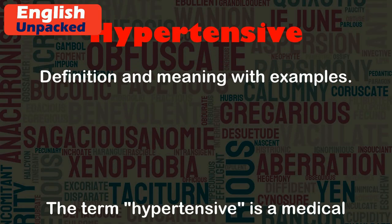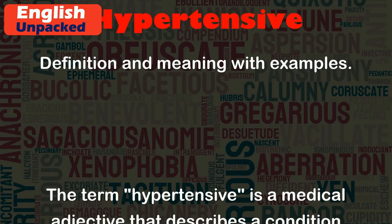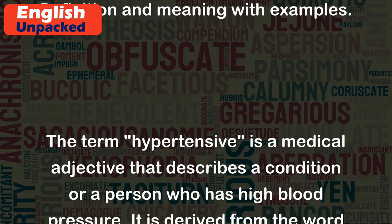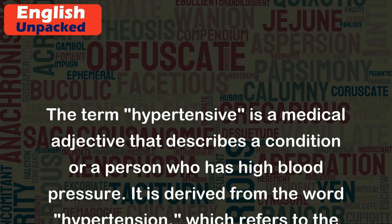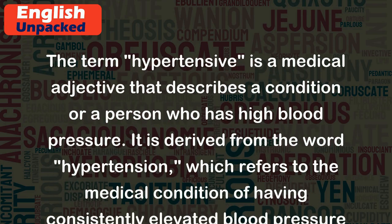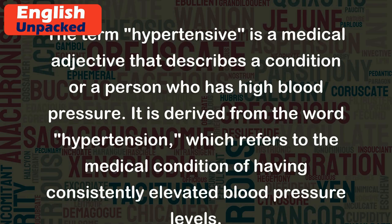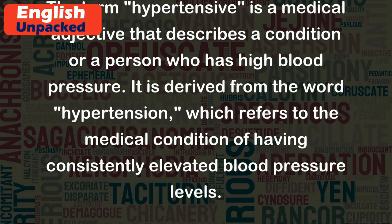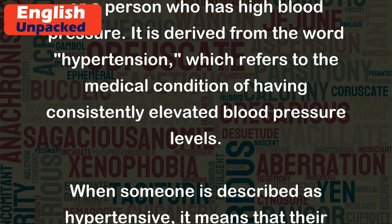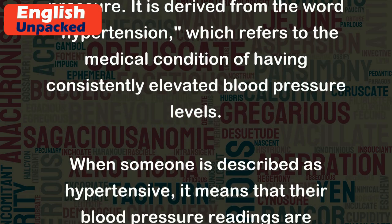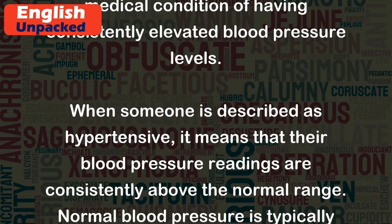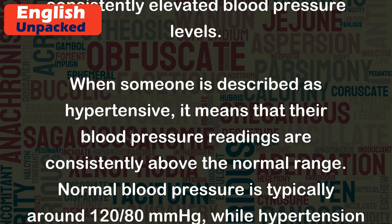The term hypertensive is a medical adjective that describes a condition or a person who has high blood pressure. It is derived from the word hypertension, which refers to the medical condition of having consistently elevated blood pressure levels. When someone is described as hypertensive, it means that their blood pressure readings are consistently above the normal range.